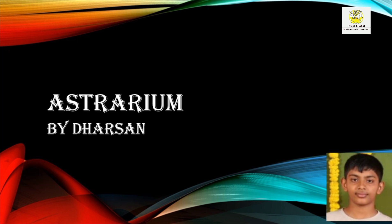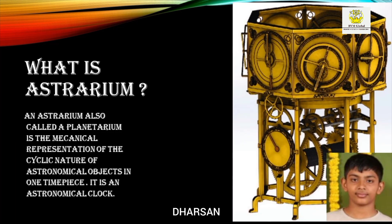Hello everyone, I am Darshan and I am going to explain about the Orrery. An orrery is also called a planetarium — a mechanical representation of the cyclic nature of astronomical objects in one timepiece. It is an astronomical clock.